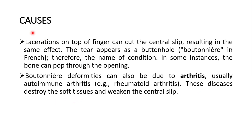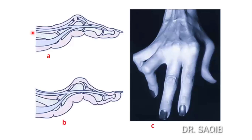In some instances, the bone can pop through the opening. This is the bone popping through the buttonhole created — this is the characteristic appearance of the Boutonnière deformity.